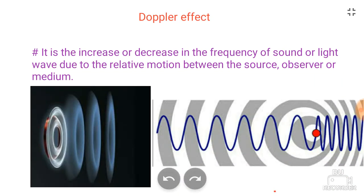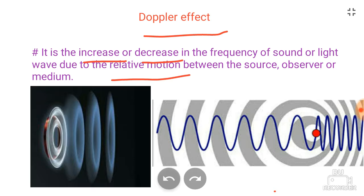Now I will define what the Doppler effect is. Basically, it is the increase or decrease in the frequency of sound or light waves due to the relative motion between the source, observer, or the medium. So when there is any motion between the source, observer, or the medium — meaning if the medium is also moving — there is also a Doppler effect.